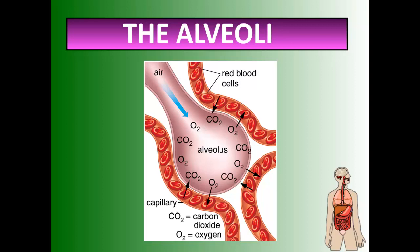Here is a diagram representing gas exchange between the circulatory system and the respiratory system. This pink structure is the alveolus — one of those tiny little structures within the lungs. You have millions of these. Surrounding each alveolus is a capillary, and as red blood cells pass very close by, oxygen will diffuse in and carbon dioxide will diffuse out, giving us this gas exchange that allows us to breathe.